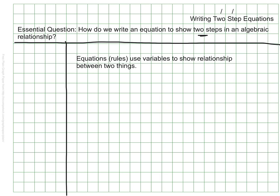As we know from previous work, equations, or what we sometimes call rules, use variables to show a relationship or connection between two things. For example, I could use the equation m = 8h to represent m, the money I make, in h hours if I make $8 an hour. So I can use that equation to find out how much I would make for any number of hours that I might work.